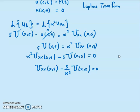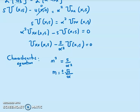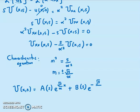Now you need to find the characteristic equation for this second-order ODE. The characteristic equation is m² equals s/alpha², so m equals plus or minus sqrt(s)/alpha. This gives the general solution for U(x,s) as: U(x,s) = A(s)·e^(sqrt(s/alpha)·x) + B(s)·e^(-sqrt(s/alpha)·x).